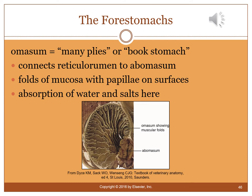The omasum is sometimes called the 'many plies' or 'book stomach' due to its fold-like layers. The reticulum has a distinctive honeycomb shape. The omasum connects the reticular rumen to the abomasum, and its folds increase surface area similar to rugae in monogastric stomachs. Water and salts are absorbed here.